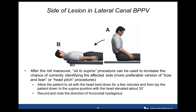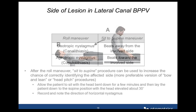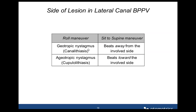When it's difficult to decide which side is stronger, there is a maneuver called the bow and lean or head pitch maneuver to identify the side of lesion. The patient sits with head tilted down, then is laid supine with the head straight and lifted 30 degrees. You record which direction the nystagmus is beating. If the nystagmus in the roll maneuver was geotropic, the nystagmus will beat away from the involved side in the sit-to-supine maneuver. If it was ageotropic, the nystagmus will beat toward the involved side.